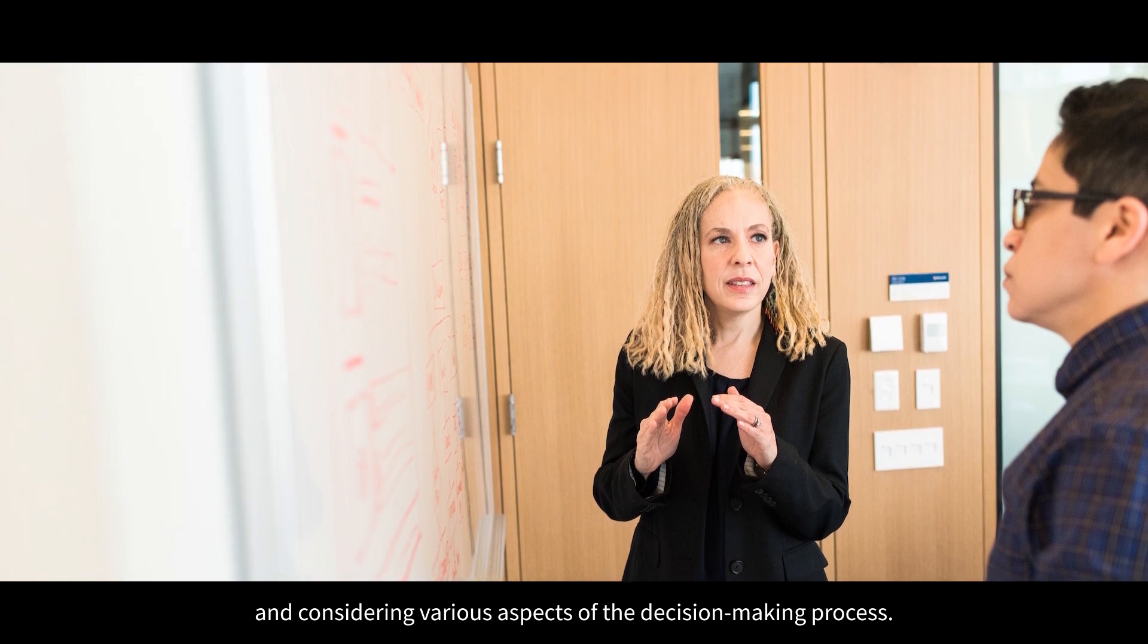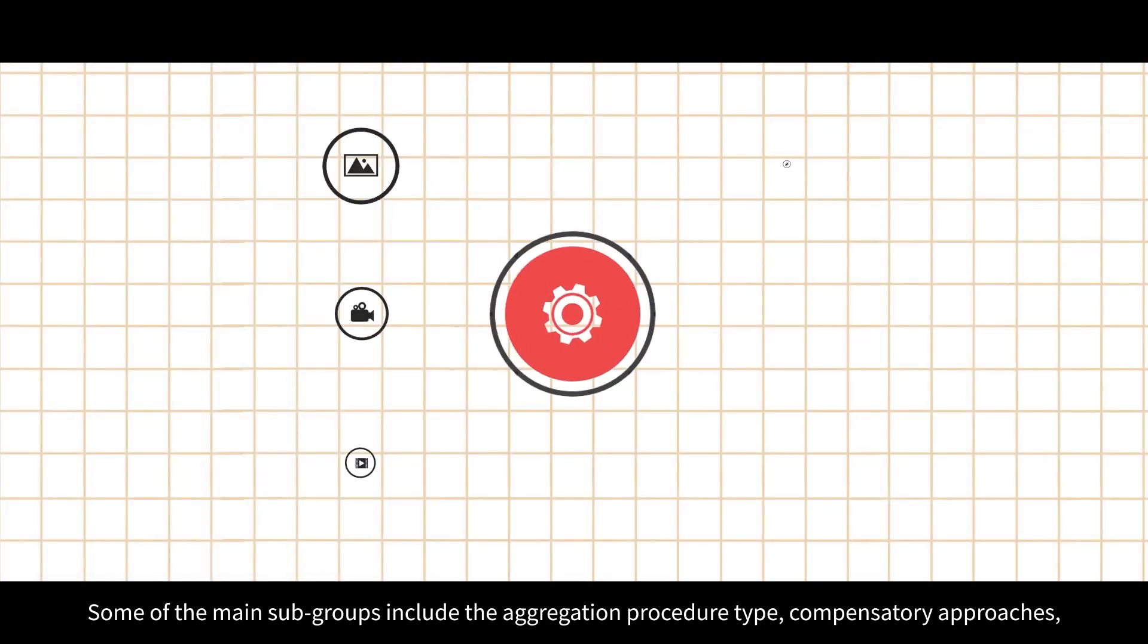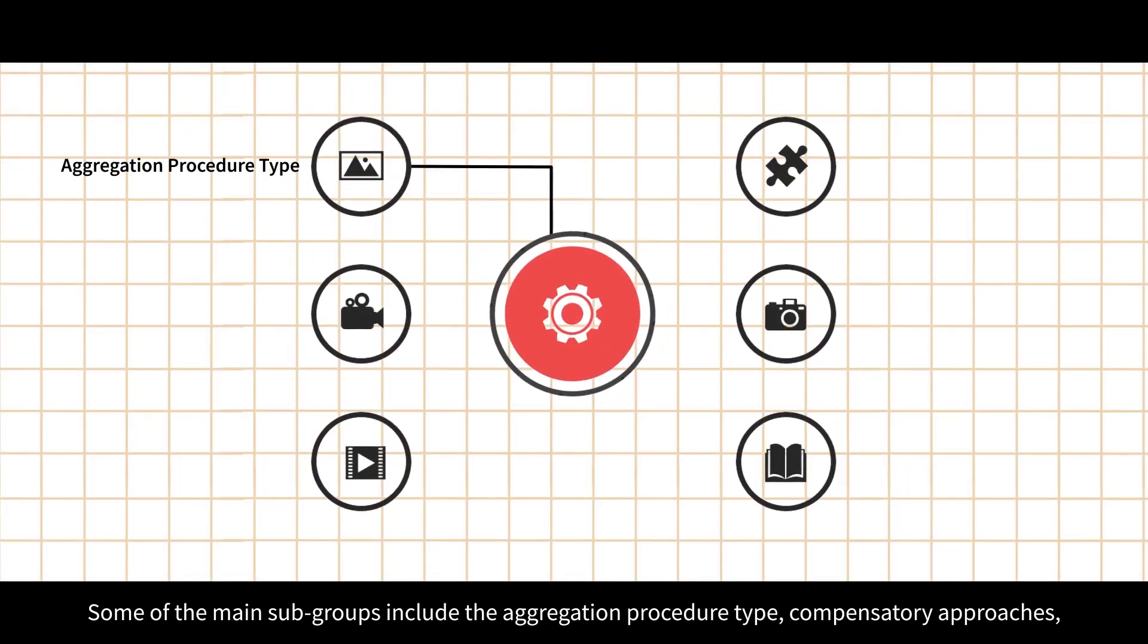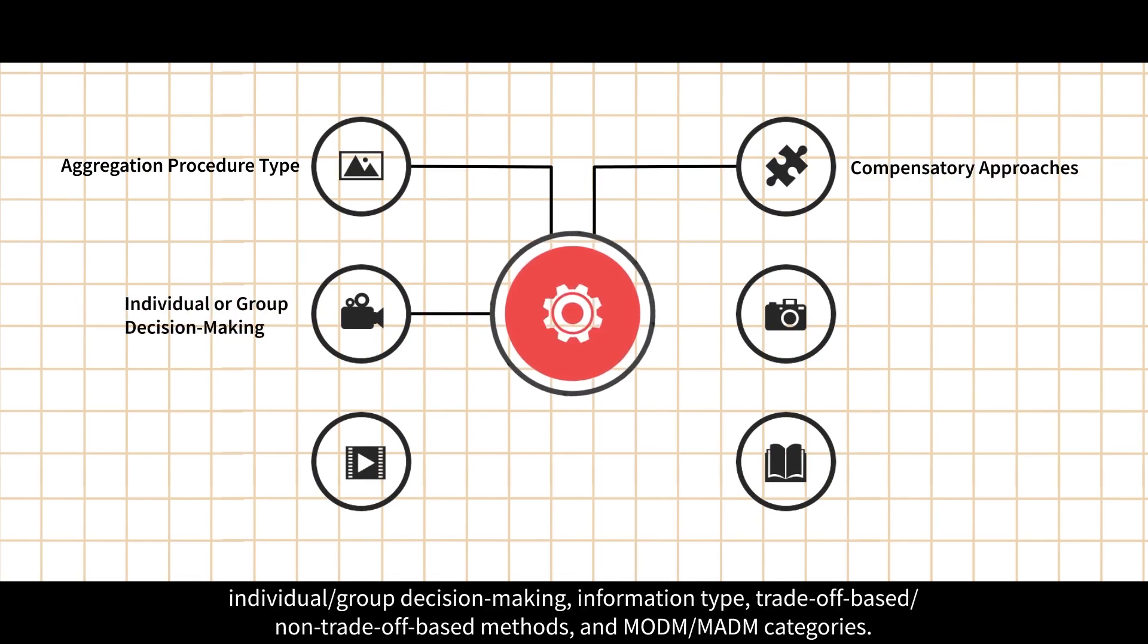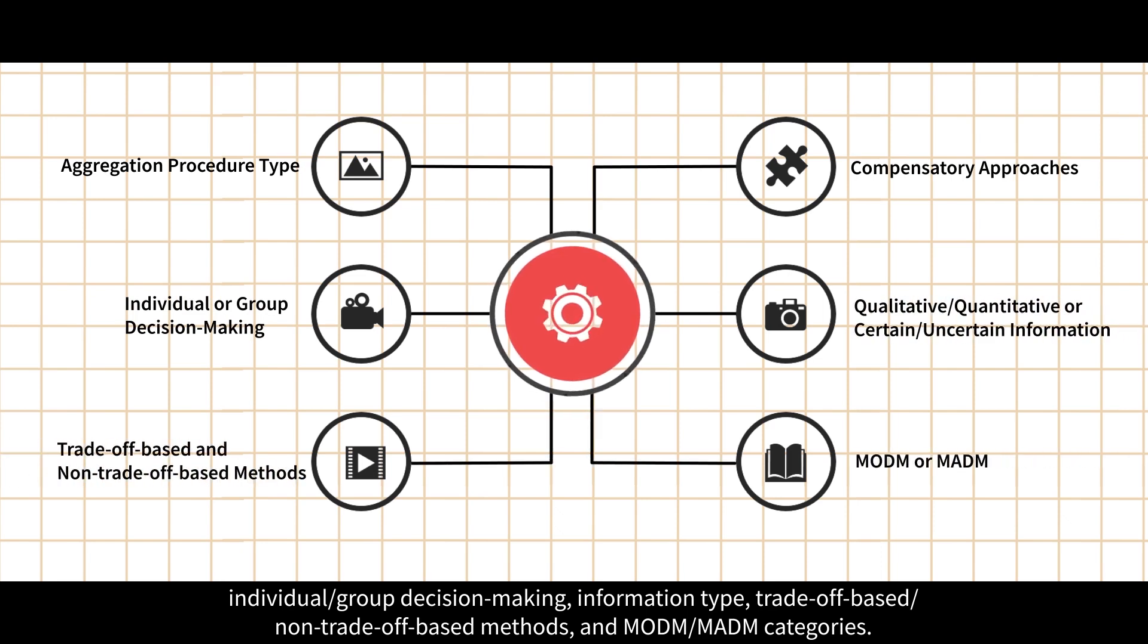The classification of MCDM problems involves recognizing different typologies and subgroups and considering various aspects of the decision-making process. Some of the main subgroups include the aggregation procedure type, compensatory approaches, individual or group decision-making, information type, trade-off based or non-trade-off based methods, and MODM or MADM categories.